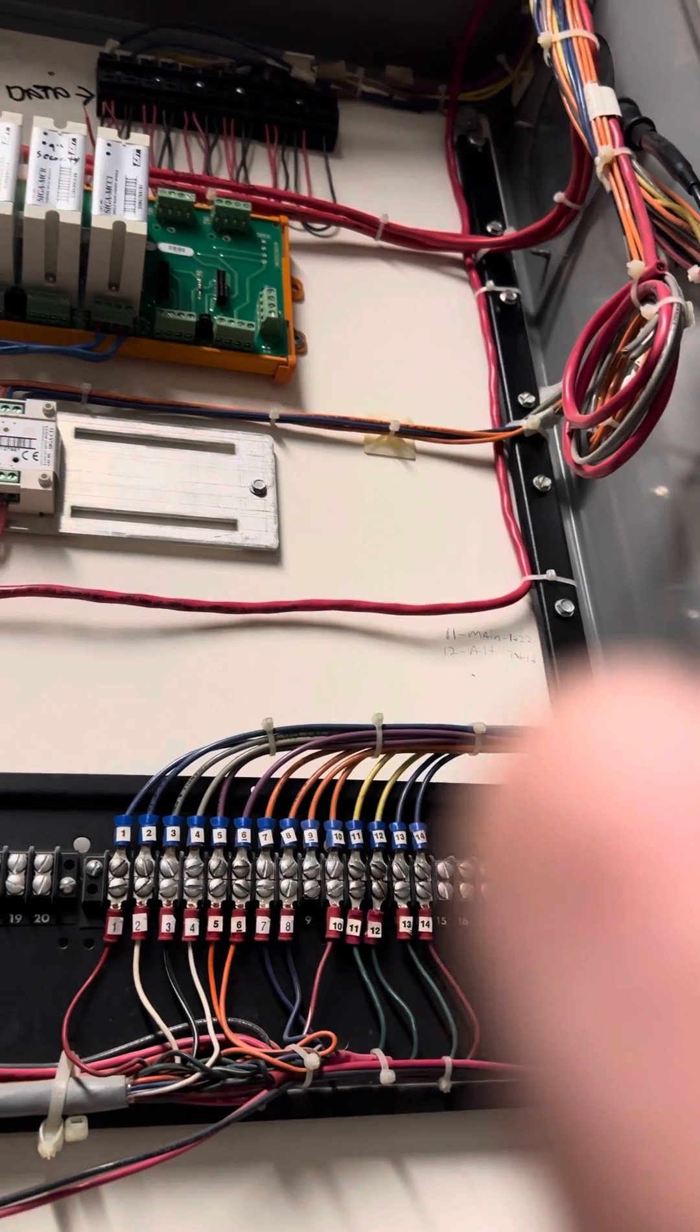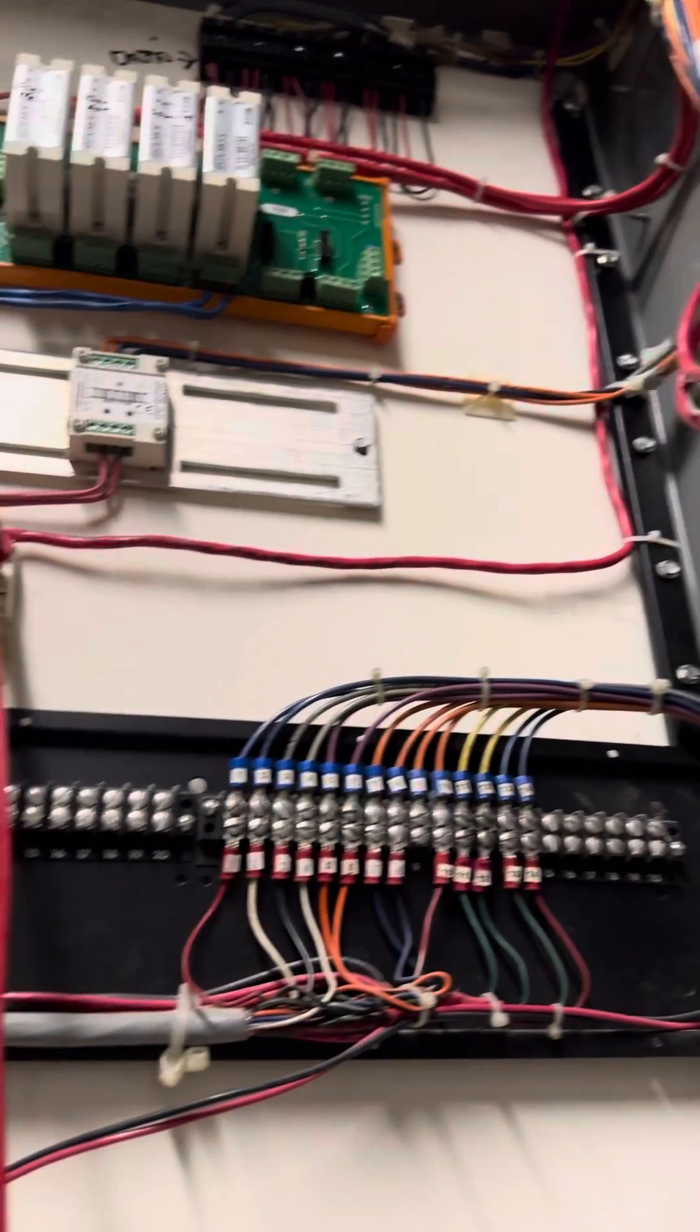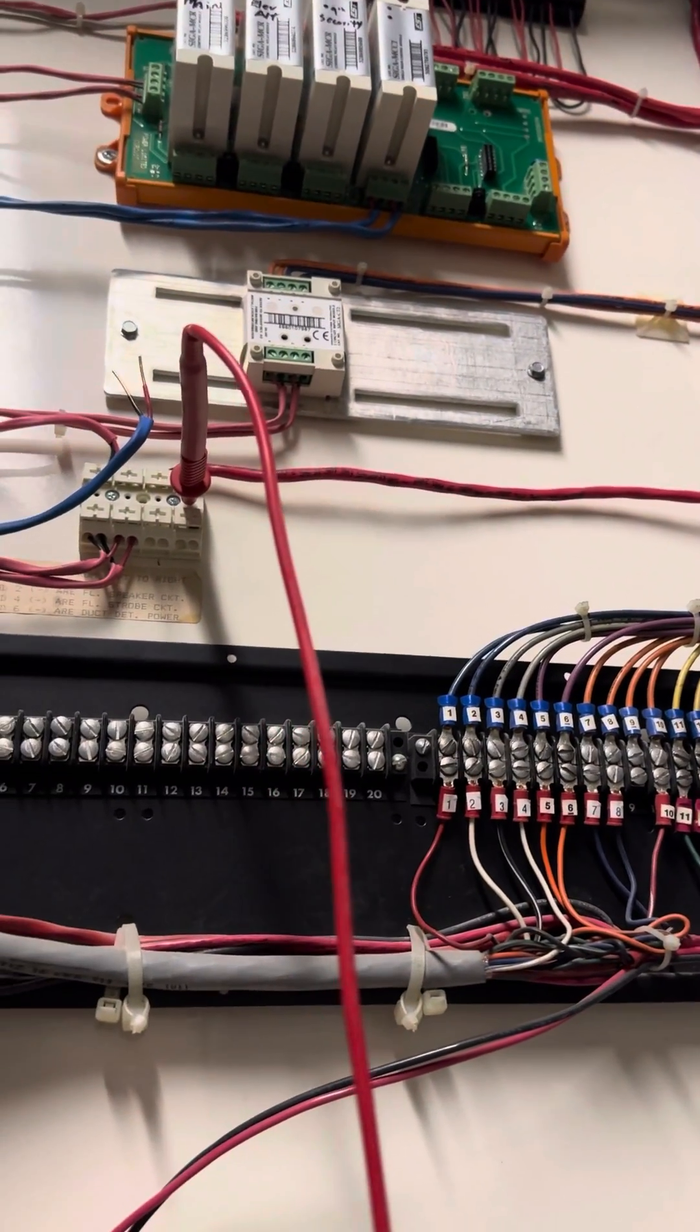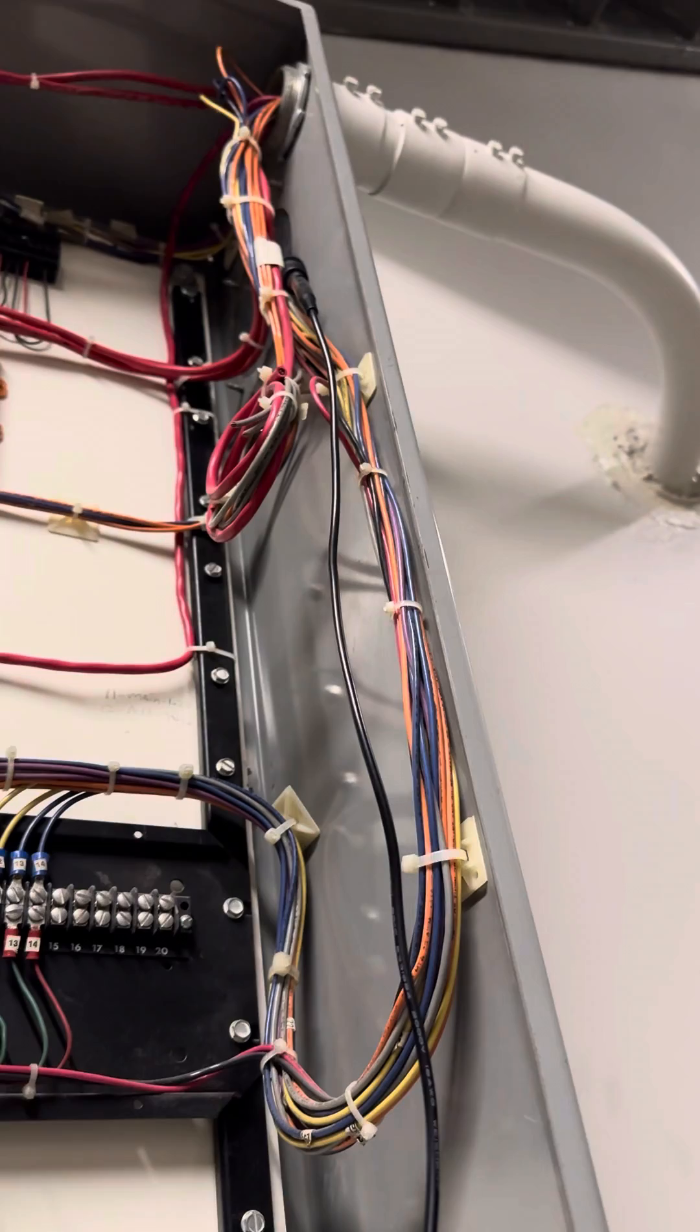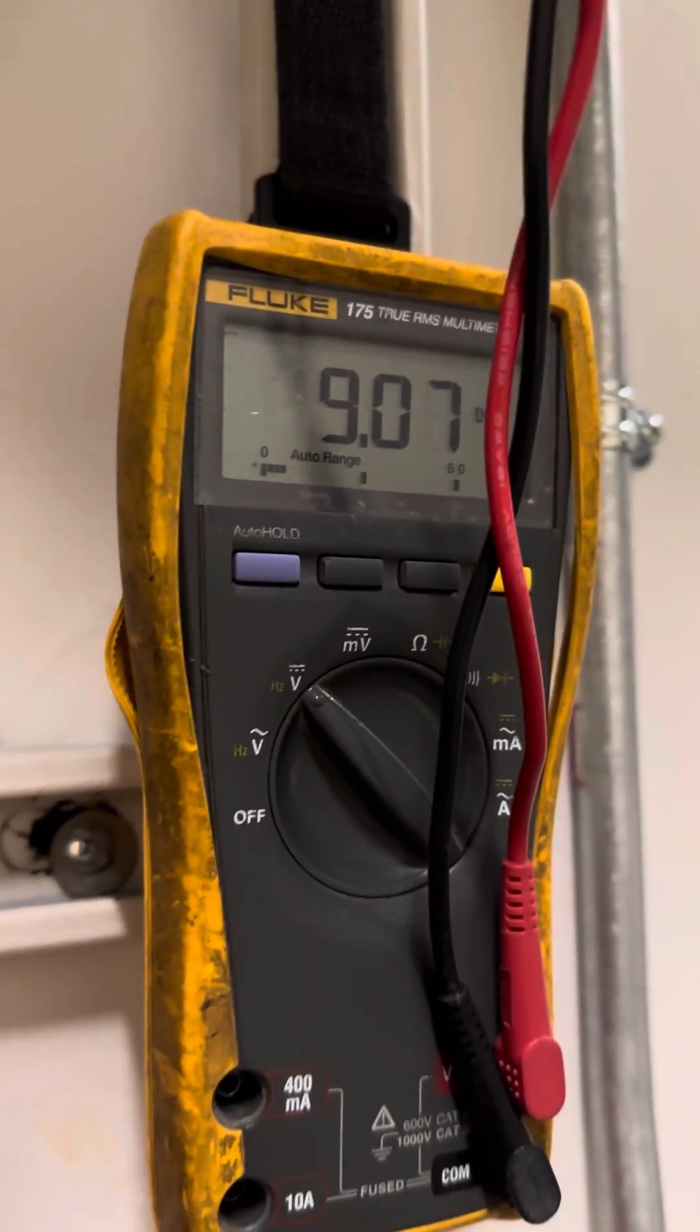I got my meter on DC and then the other leg I have on ground reference right there on the cabinet chassis, and I'm reading 9 volts DC. It's the same thing on the other side.